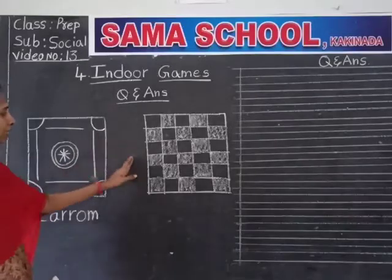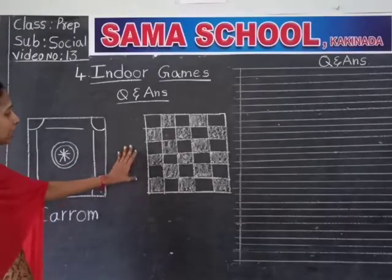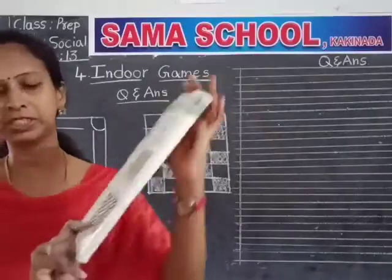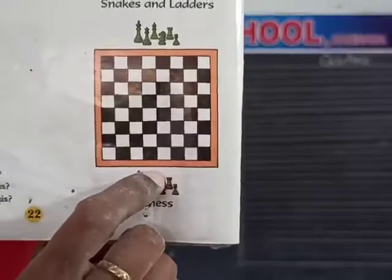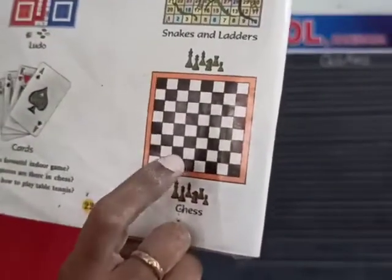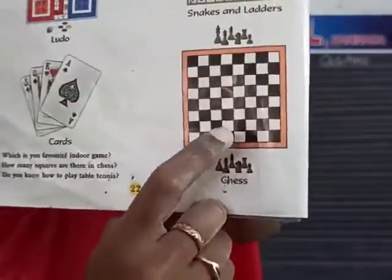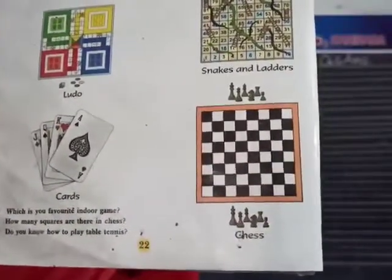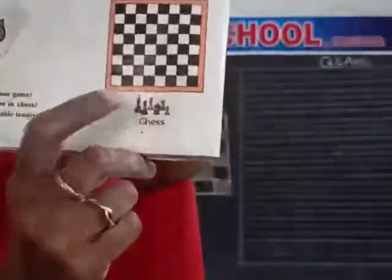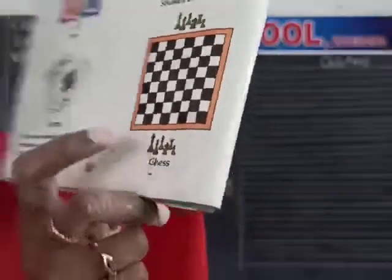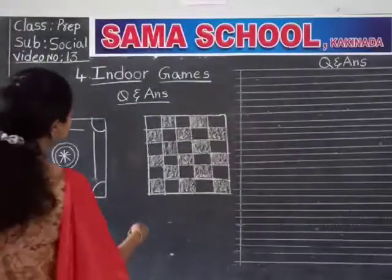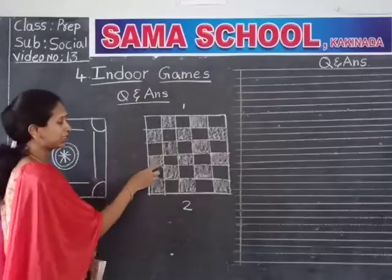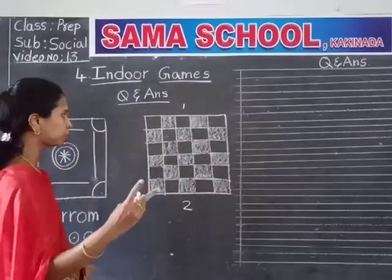And the next one — this is the chess board. How do you see here? This is the chess board. What are the colors? White color and black color. This is the chess board. In this game, two members will play. How many members? Two members will play this game.